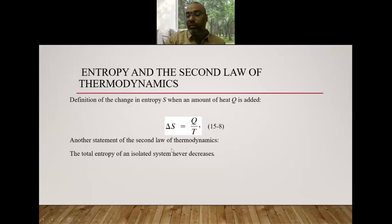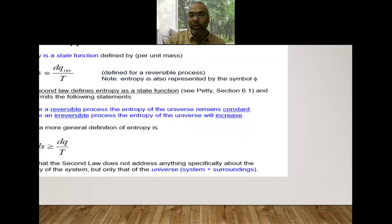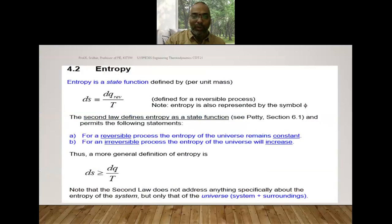The total entropy of an isolated system will never decrease — it always increases for an irreversible process, or remains constant for a reversible process. If the entropy of an isolated system is decreasing, it is violating the second law of thermodynamics. These are the important points related to entropy.